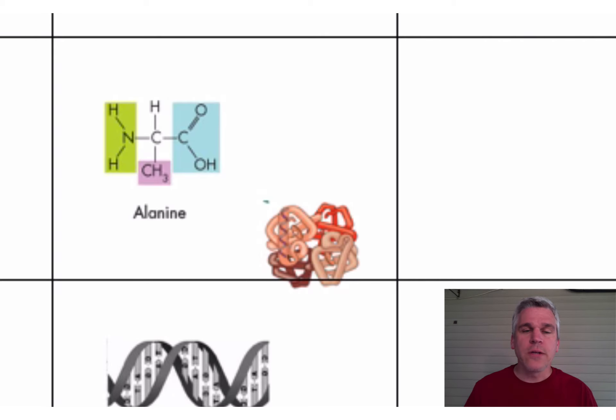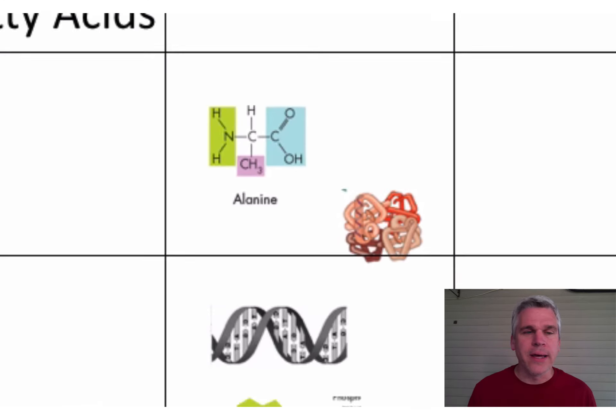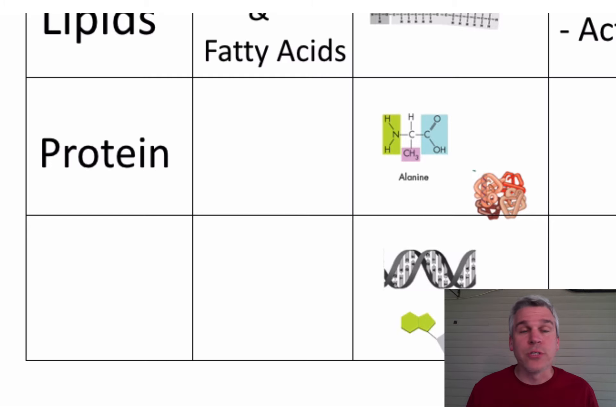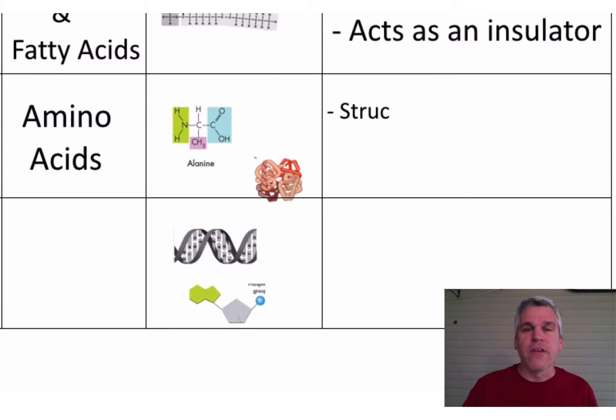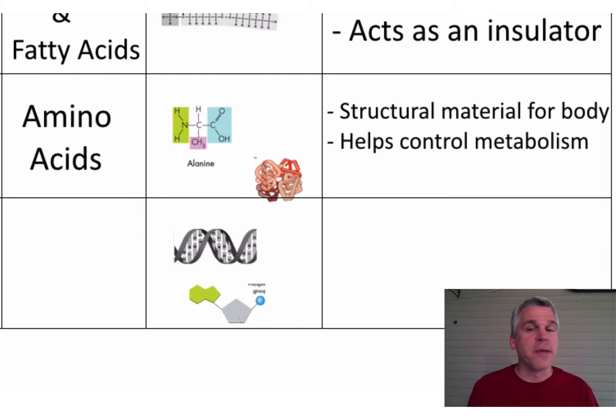Now the next one, we see a couple of weird shaped things. We see a molecular formula, and then what looks kind of like a ball made out of string. That is a protein. Remember that proteins are made up of amino acids, and their function is to be the basic structural material for the body, as well as to make enzymes and hormones that help to control metabolism.